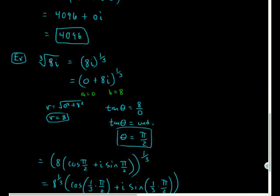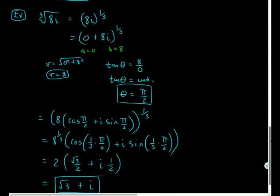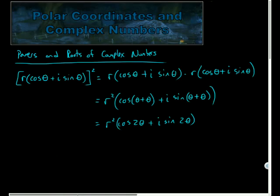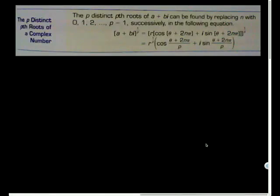So this is actually going to be the principal root of this complex number. It turns out that if I have a cubed root of a complex, I will actually have 3 separate roots of that. And that's where we come to our next situation, which I'm not going to derive this property for us. But the p distinct roots or p distinct pth roots of a complex number can be found the following way.